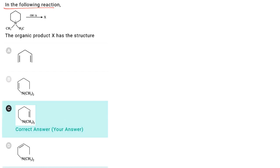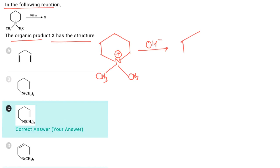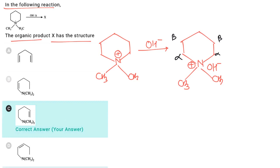In the following reaction, the organic compound X has this structure. We have a quaternary ammonium ion. This quaternary ammonium ion on treating with OH⁻ will be converted first to a quaternary ammonium hydroxide. In quaternary ammonium hydroxide, E1CB reaction takes place. The alpha and beta positions are identified — the leaving group is eliminated from the alpha position and hydrogen is eliminated from the beta position.